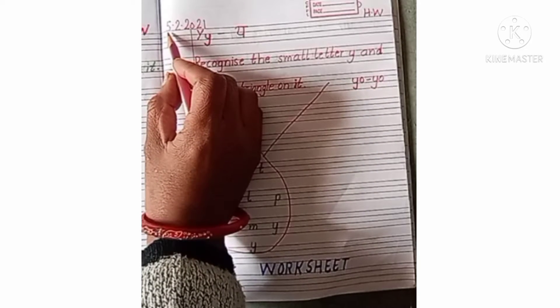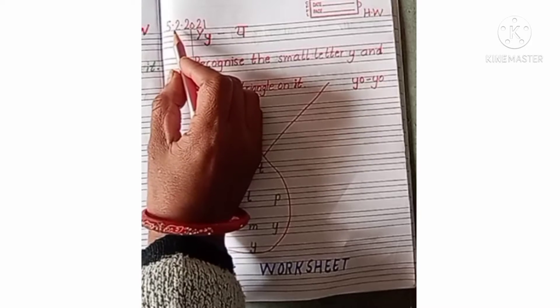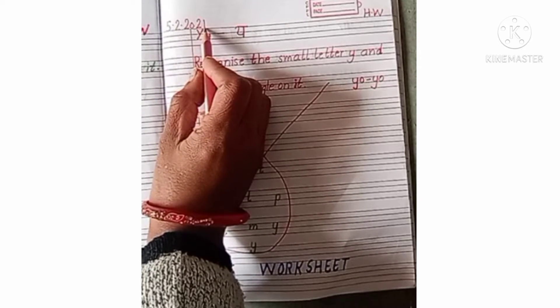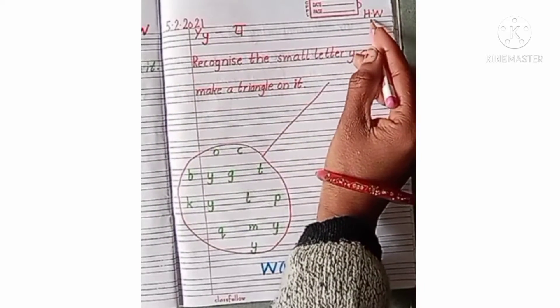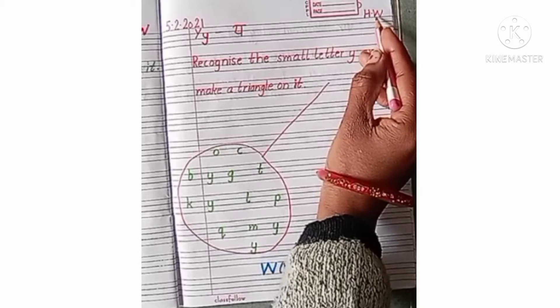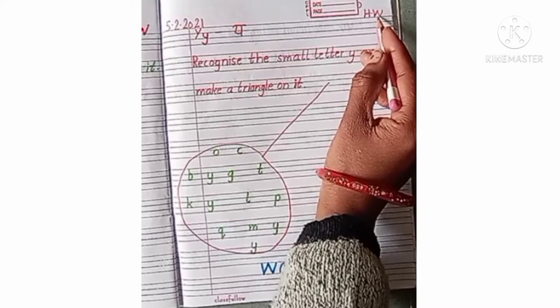First of all you will mention the date here. You have first date write down. And write down the HW also. HW means homework. Homework means which you can do to work for your home.